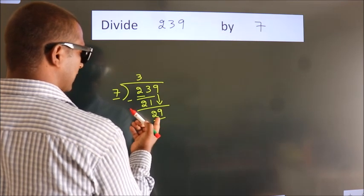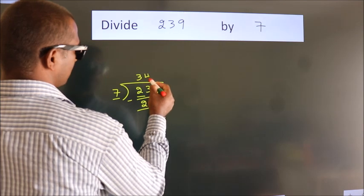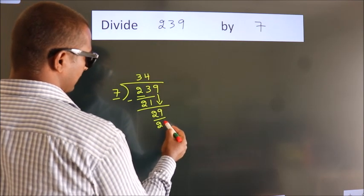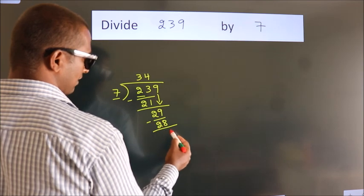A number close to 29 in the 7 table is 7 times 4, which is 28. Now we subtract. We get 1.